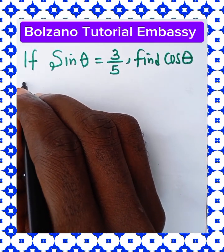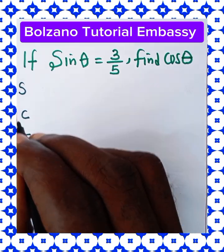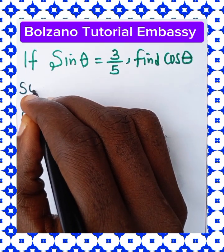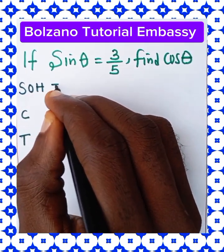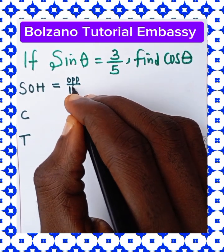Our sine angle, our cosine angle, and our tangent angle. Sine angle represented with SOH, which is opposite over hypotenuse.